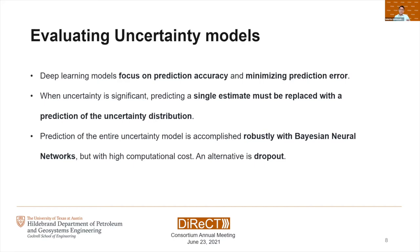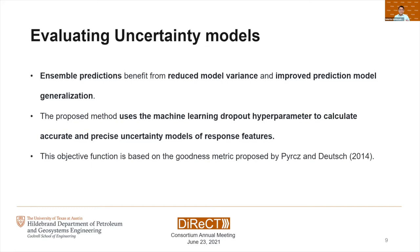Dropout is a technique that addresses overfitting in neural networks and provides an approach to improve prediction accuracy by ensemble learning. These ensemble predictions benefit from reduced model variance and result in reduced expected error in testing and improved model generalization. The proposed workflow uses the machine learning dropout hyperparameter to calculate uncertainty models of response features by using an objective function to summarize uncertainty model performance. We call this function uncertainty model goodness, and it is based on the goodness metric proposed by Berks and Dutch.